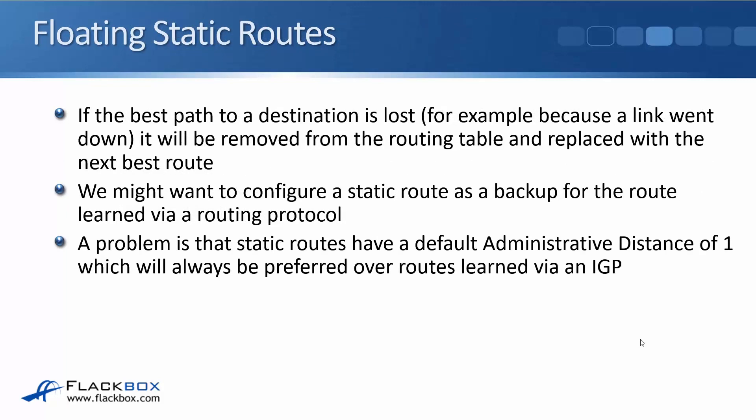Another thing we can do is floating static routes. If the best path to a destination is lost — for example, because a link went down — it will be removed from the routing table and replaced with the next best route. We might want to configure a static route as a backup for the route learned via a routing protocol, perhaps because we're worried the entire routing protocol would go down. A problem is that static routes have a default administrative distance of one, so they're always going to be preferred over routes learned via an IGP. So how can we make that static route the second choice?